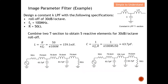Let's work through the first example: design a constant K low-pass filter with a roll-off factor of 30 dB per octave, a cutoff frequency of 100 MHz, and a source/load resistance of 50 ohms. The solution is to combine two T-sections in order to obtain five reactive elements for 30 dB per octave, since each reactive element contributes 6 dB per octave — so 5 × 6 = 30 dB per octave.